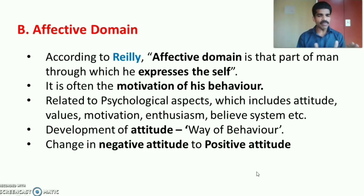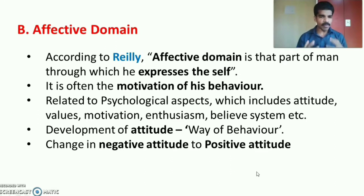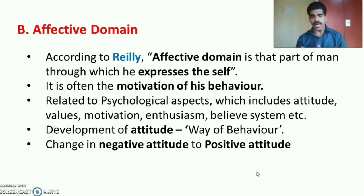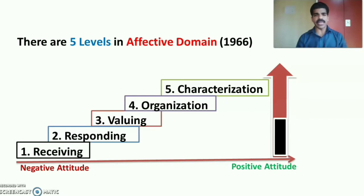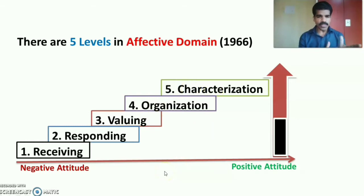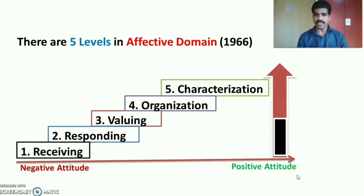It is about changing from negative attitude to positive attitude. Education, or the affective domain, helps to change the negative attitude of the student to positive attitude at the end of the teaching-learning process. As per the 1966 taxonomy, there are five levels in the affective domain: receiving, responding, valuing, organization, and characterization. From receiving to characterization, the attitude of the learner changes from negative to positive.